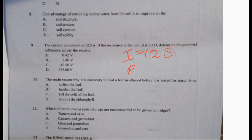If the resistance is 30 ohms, find the potential difference. V equals I times R, so the potential difference is 12.5 times 30, which equals 375 volts.